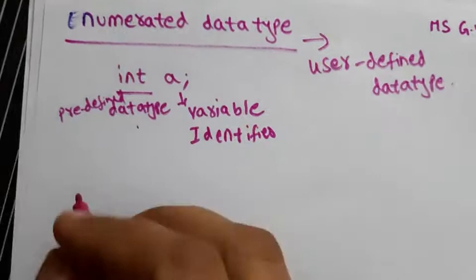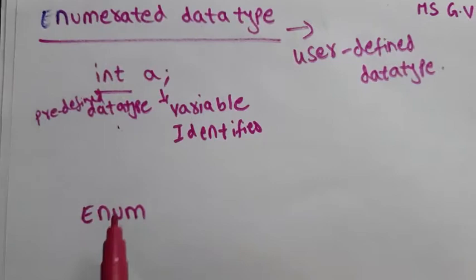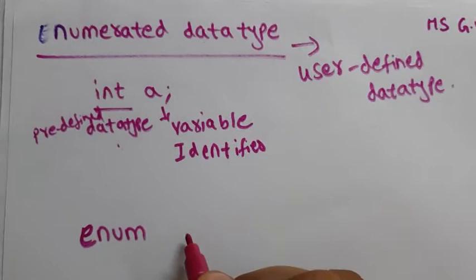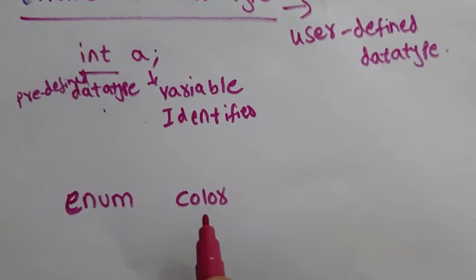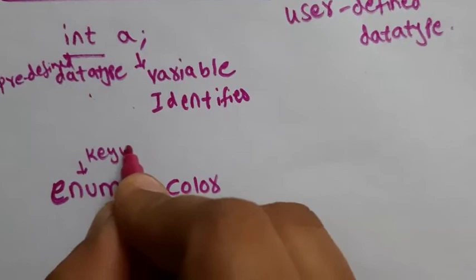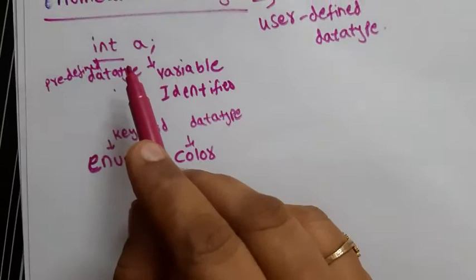So how do we create a user-defined data type? Let's see an example with the syntax. The keyword is enum — that stands for enumerated. For example, instead of int, I want to create my own data type with the name color. So enum is the keyword, and color is my own data type name.